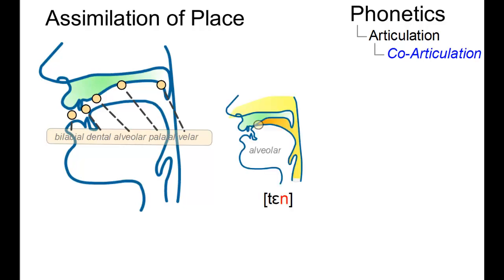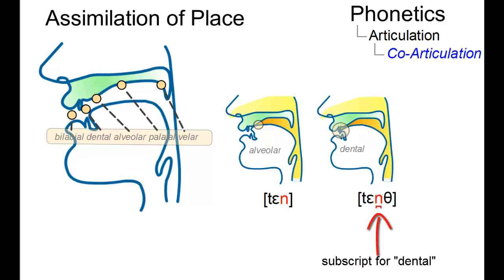while the sound n in English normally involves an alveolar place of articulation, as in ten, in the word tenth, it is pronounced with a dental place of articulation because the following sound is dental.